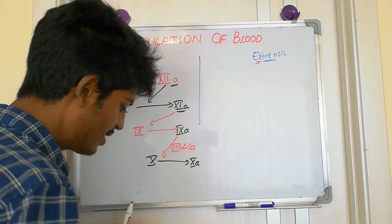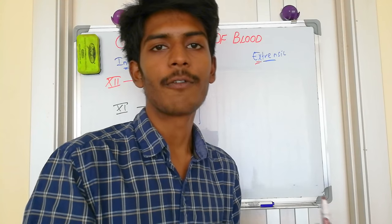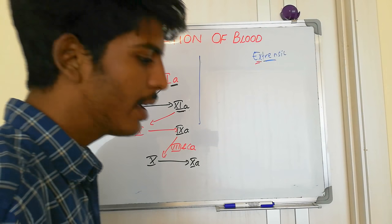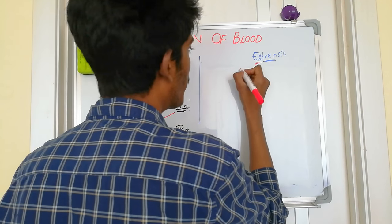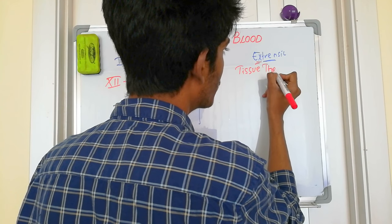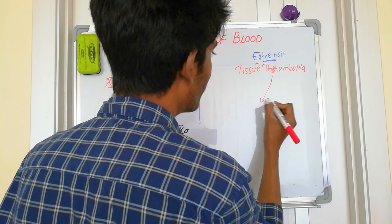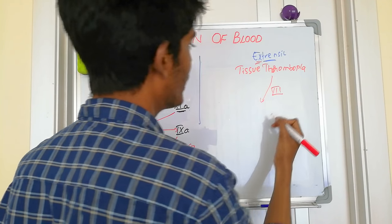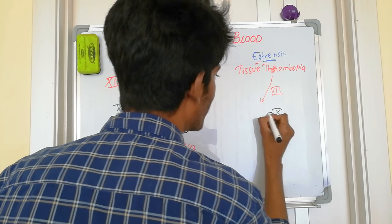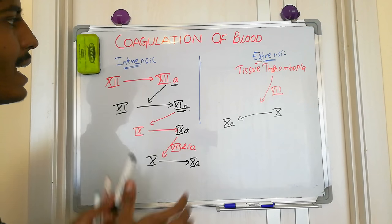The extrinsic pathway is triggered by tissue thromboplastin. In the presence of factor 7 (stable factor), tissue thromboplastin activates factor 10 to its active form (10a). So the target of both the extrinsic and intrinsic pathways is the activation of factor 10.